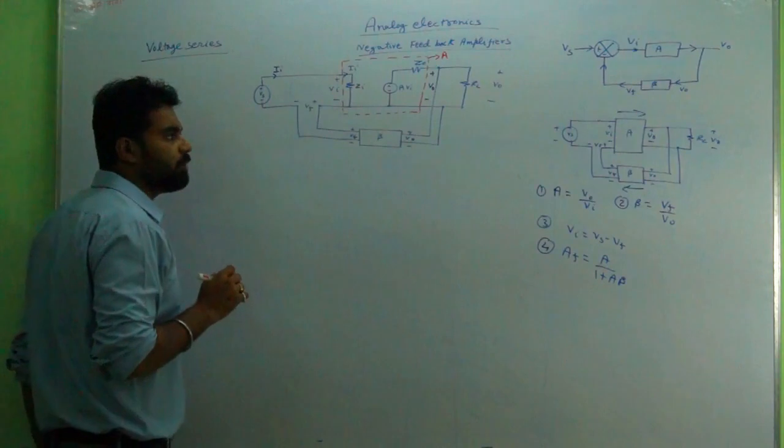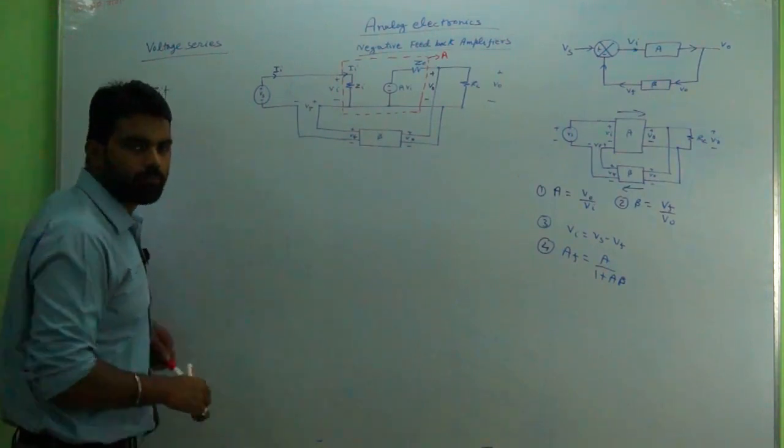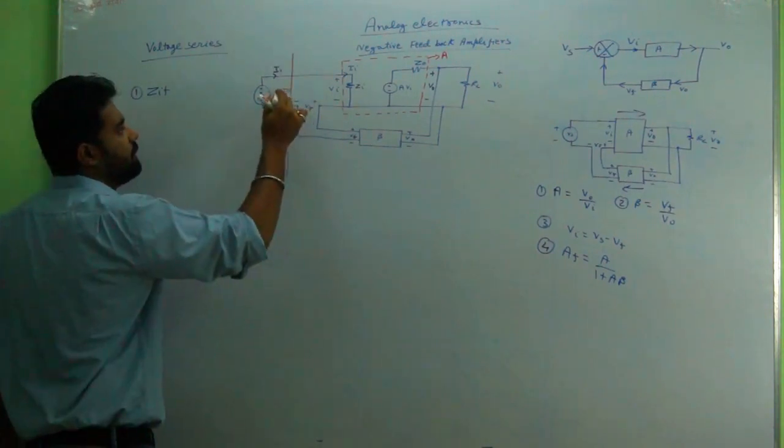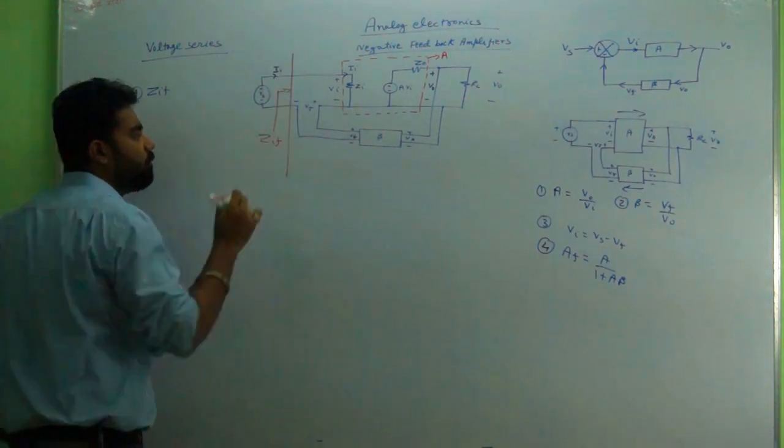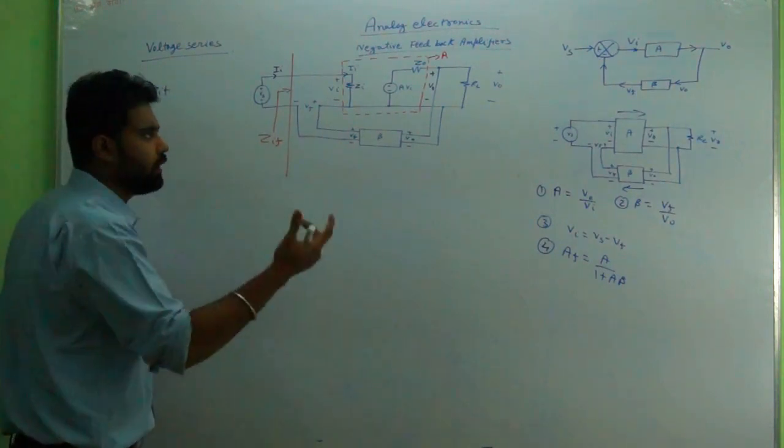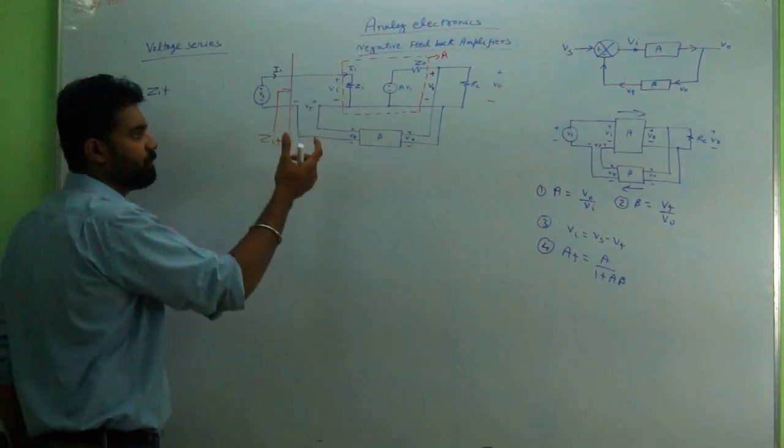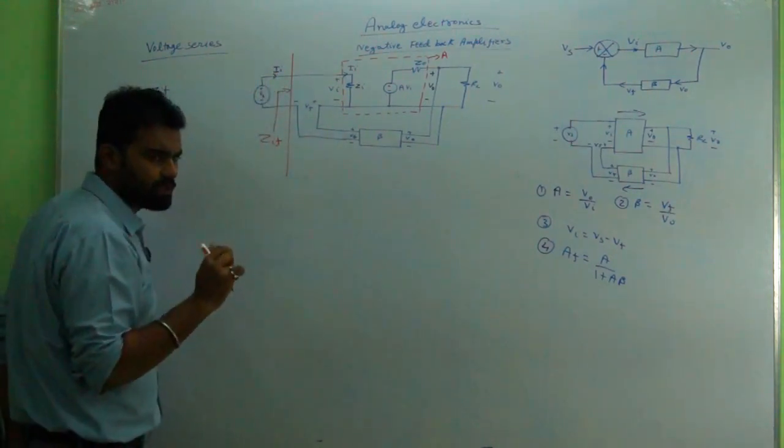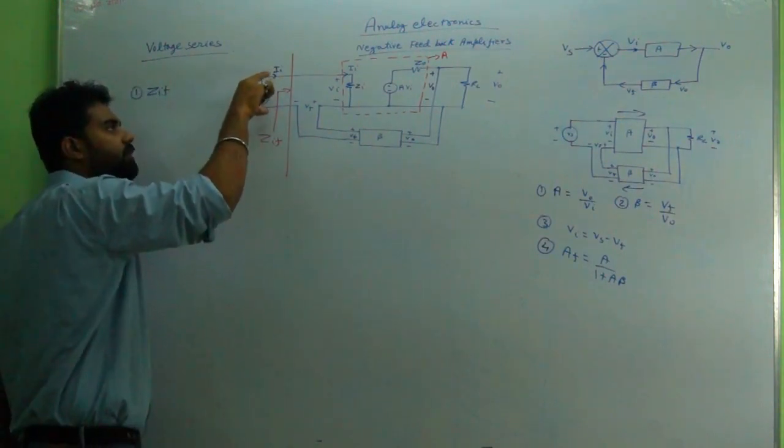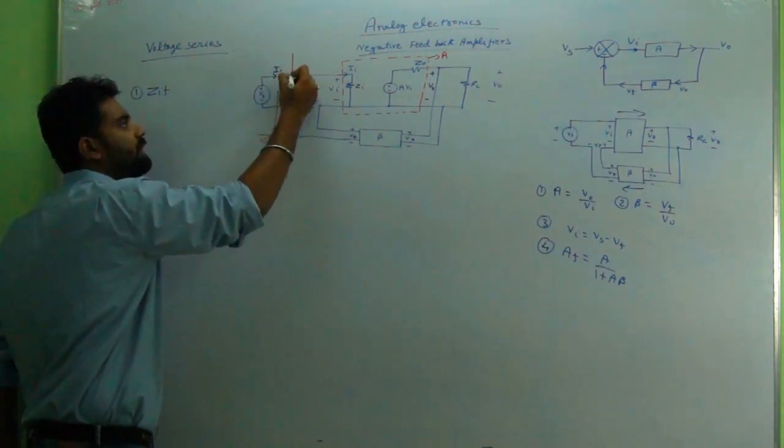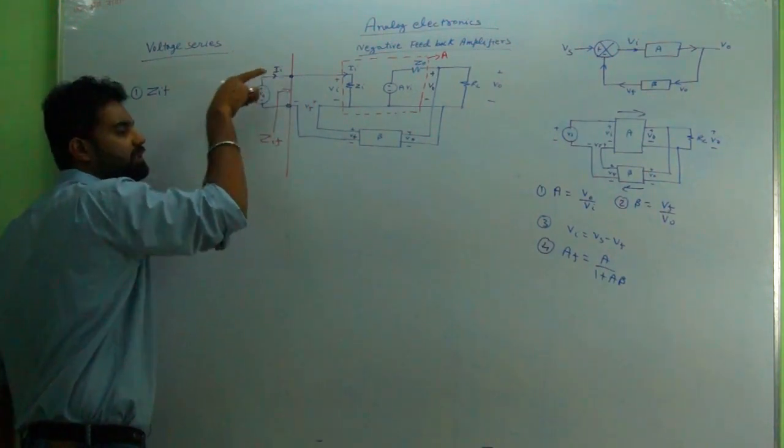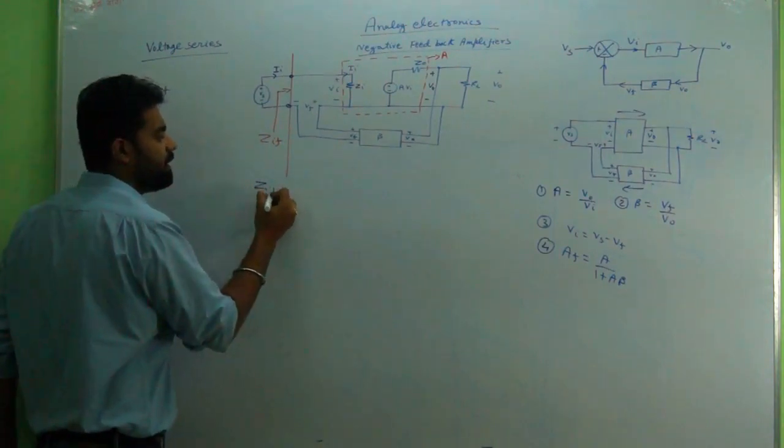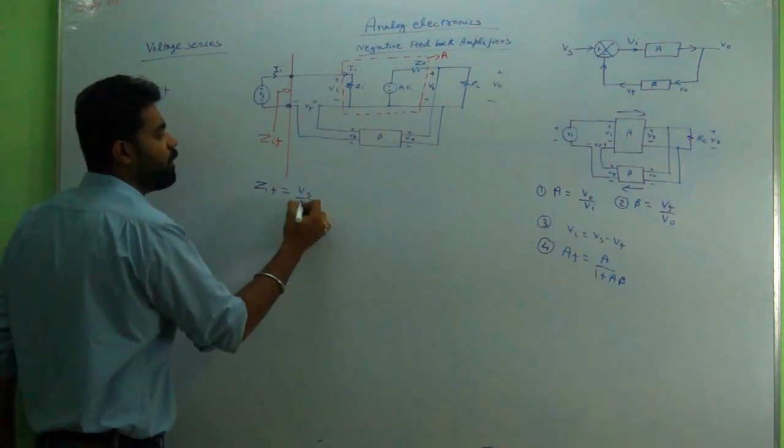Now what is input impedance with feedback? I will draw the diagram - this is ZIF. What is ZIF? It is easy - by Ohm's law we will derive that whatever amount of voltage we are applying over these two nodes (Vs) and what is the amount of current we are getting (Ii), ZIF = Vs/Ii. This is the thing that has to be derived.